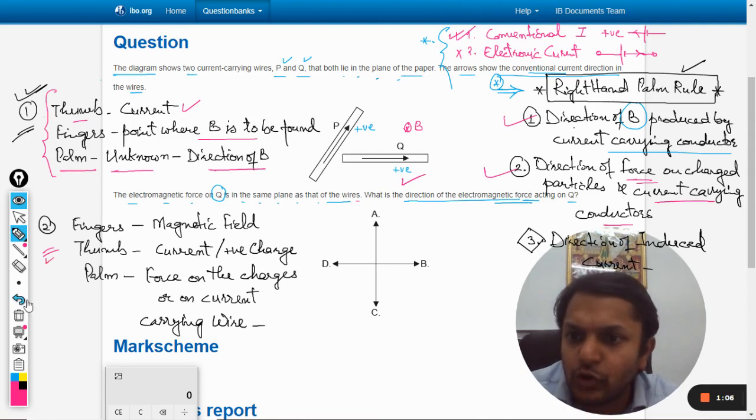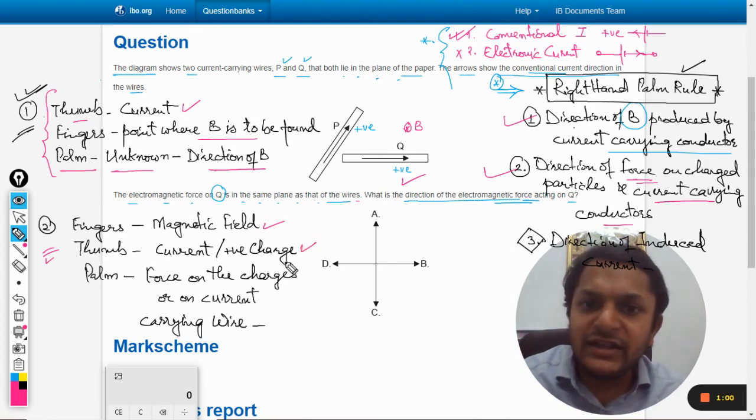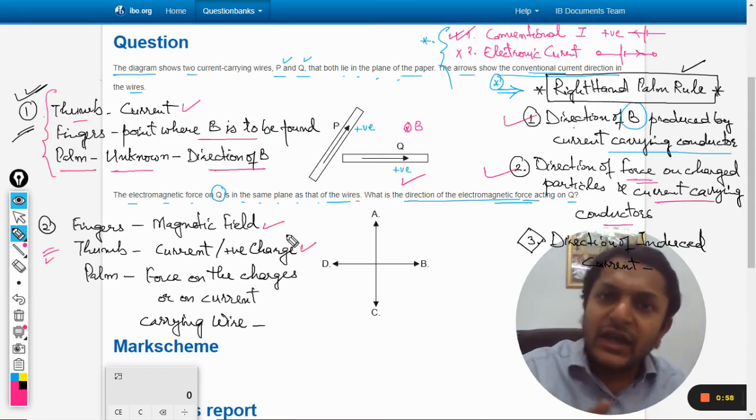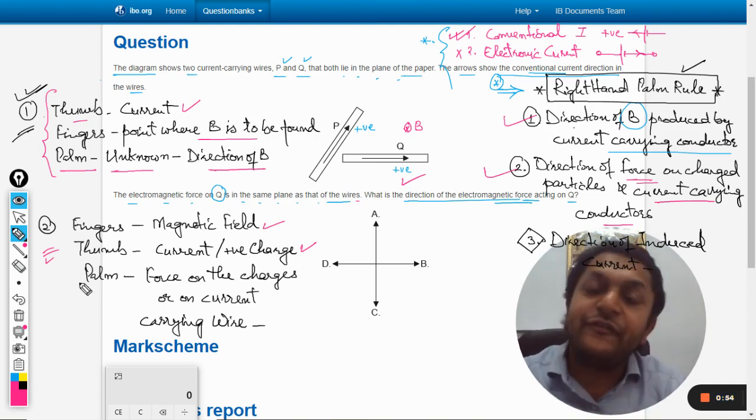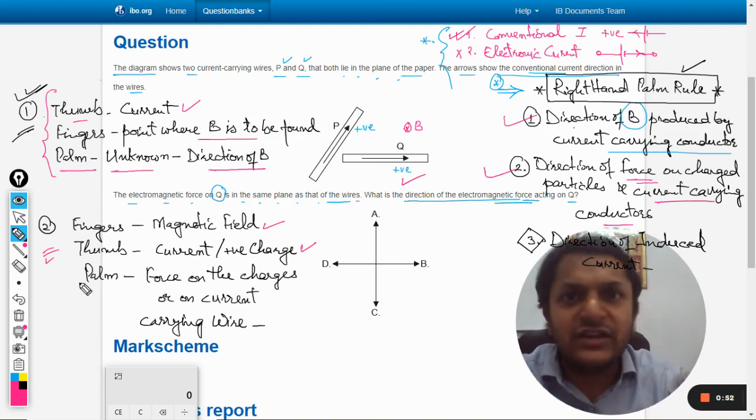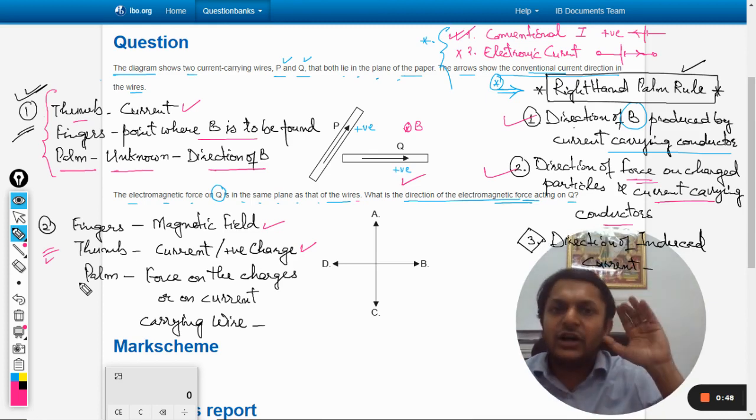What is happening in this type 2 rule is fingers will be pointing towards the direction of the magnetic field, thumb in the direction of the current in the second wire, and palm will tell you the force, the direction of the force which the current carrying conductor will experience. So let us apply the second type of the rule with our right hand now.